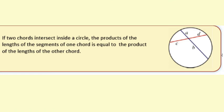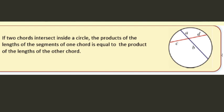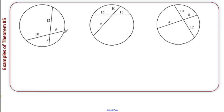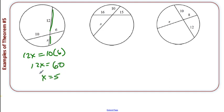Last theorem — theorem number five. This one is so easy. Two chords intersect inside a circle: the product of the lengths of the segments of one chord equals the product of the lengths of the segments of the other chord. A times B equals C times D. It is that simple. So you're given a circle — just multiply: 12 times X equals 10 times 6. You get 12X equals 60, so X equals 5.